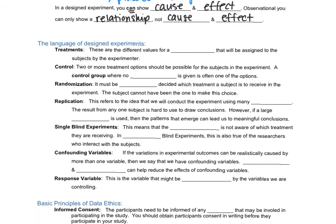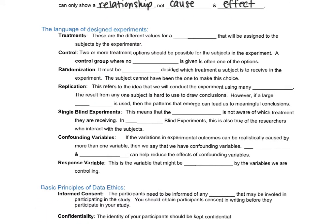So let's do a little bit more vocab and then in the next video we'll have examples to understand all this. So lots of vocab. So treatments. Treatments are the different values for a variable that will be assigned to the subject by the experimenter. So again, placebo versus medicine. They might have like three different medicines. So those are variables.